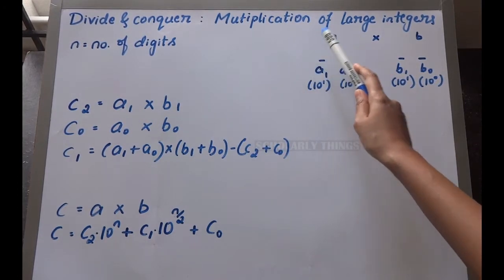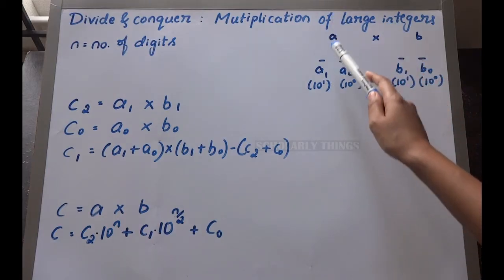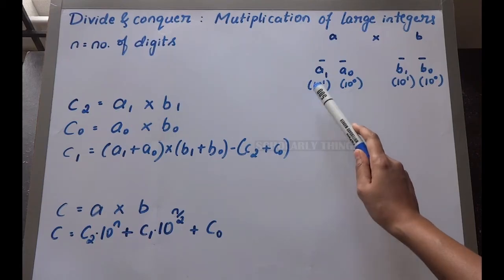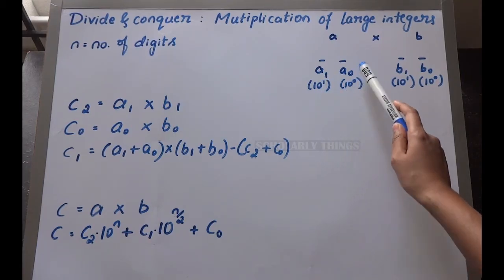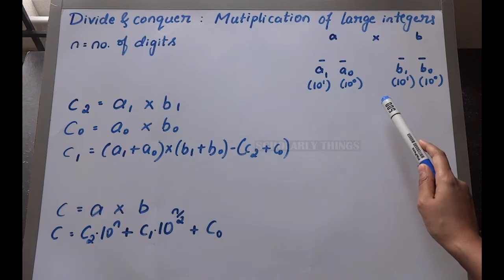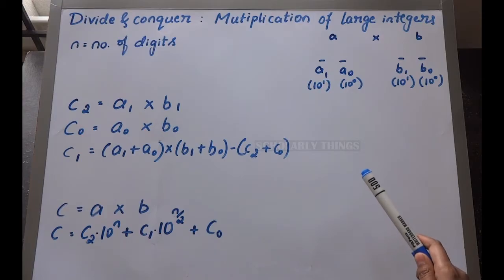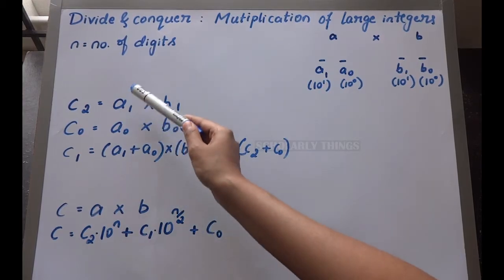Say you have a and b. We can divide the numbers as a1, a0, b1, b0. a1 is in the 10¹ position, a0 is in the 10⁰ position. b1 is in the 10¹ position, b0 is in the 10⁰ position. Using the formulas, we have to find out c2, c0, and c1.